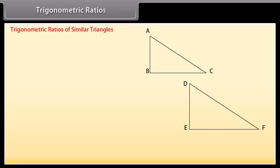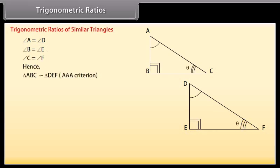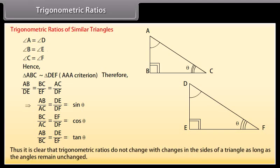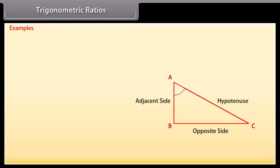Consider the two triangles: triangle ABC and triangle DEF. Angle A equals angle D, angle B equals angle E, angle C equals angle F. Hence, triangle ABC is similar to triangle DEF by the AAA criterion of similarity. Therefore, the corresponding sides of the two triangles are proportional. It is clear that trigonometric ratios do not change with changes in the sides of a triangle, as long as the angles remain unchanged.